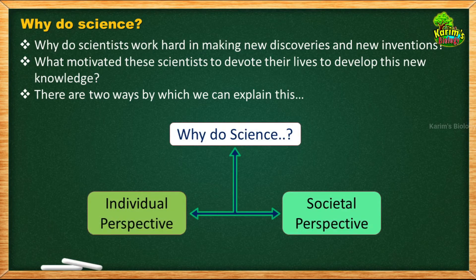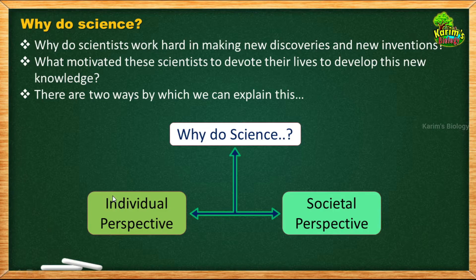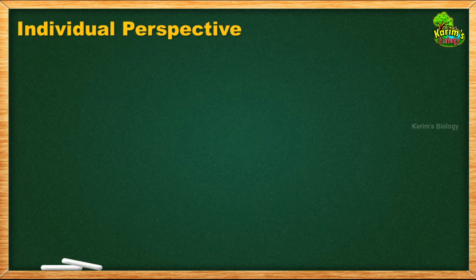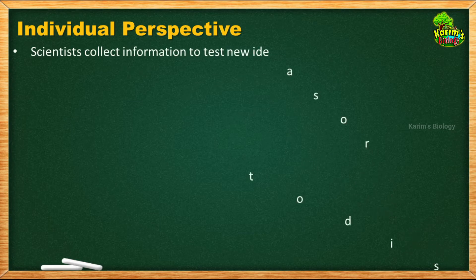It is somewhat difficult to explain what motivates scientists, but we can try to explain it in two different perspectives. One is the individual perspective and the other is the societal perspective. In the individual perspective, some scientists explore nature because they are personally interested in doing so. Others may be doing it for the sake of society.